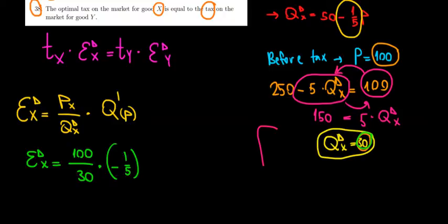Now let's see how we solve that. 100 over 5 cancel out. We are left with 20. Now 20 divided by 30 is 2 over 3 times minus 1. It becomes minus 2 over 3. So this is going to be the elasticity of demand for good X.